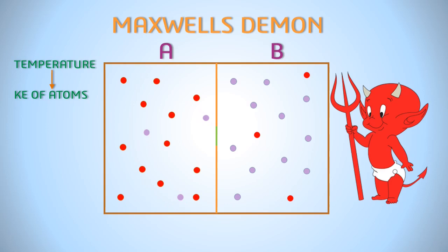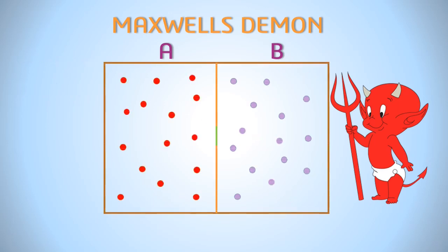The demon is aware of this and when such atom is about to hit the door, demon opens the door and the atom moves to the other side. He repeats this on both the side and after some time, we have all high energy atoms on one side and all low energy atoms on the other side. Notice, that the temperature of high temperature reservoir has increased and low temperature reservoir has decreased.